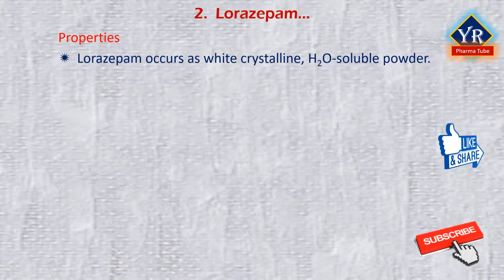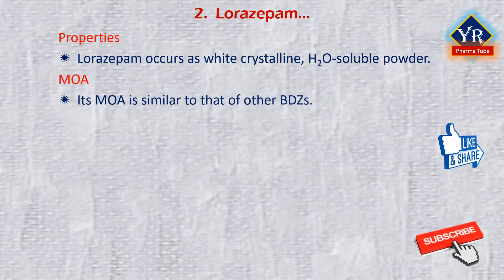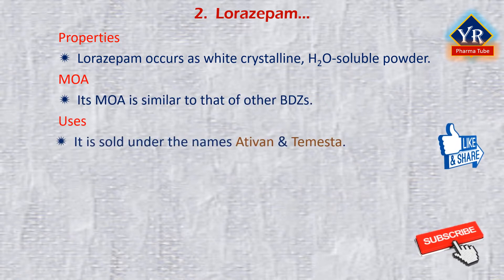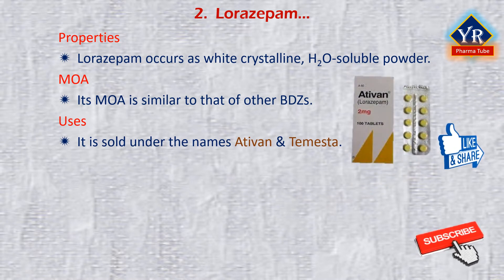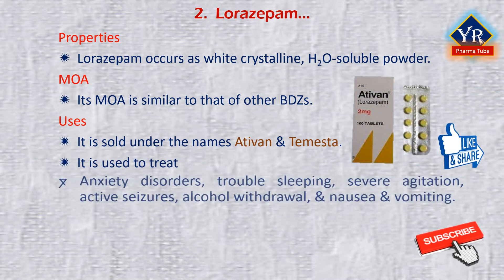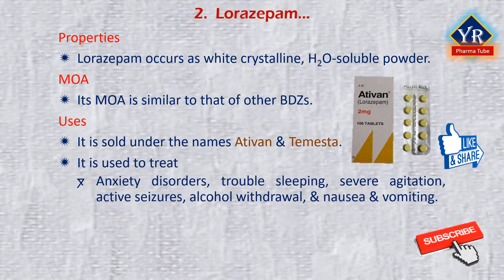Lorazepam occurs as a white, crystalline, water-soluble powder. Its mechanism of action is similar to that of other benzodiazepines. Lorazepam is sold under the brand names Ativan and Temesta. It is used to treat anxiety disorders and trouble sleeping.